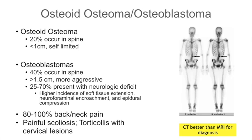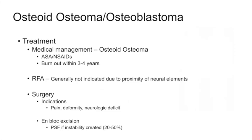Patients can have a painful scoliosis — importantly, the majority of idiopathic scoliosis is not painful, so if a patient has painful scoliosis, this is a concern for an underlying lesion. A cervical spine lesion may also present with torticollis. Treatment is mainly supportive: medical management with aspirin and anti-inflammatories. Osteoid osteomas generally burn out within three to four years and are relatively self-limited. They can also be treated with RFA, though location-dependent risks of neural changes apply.